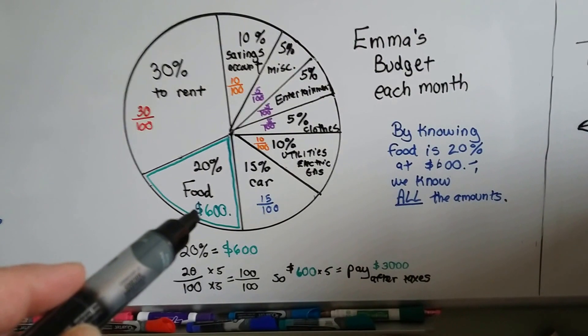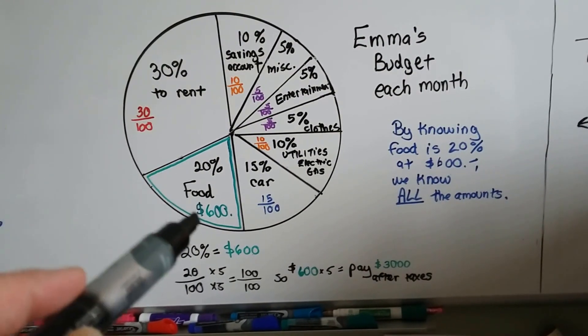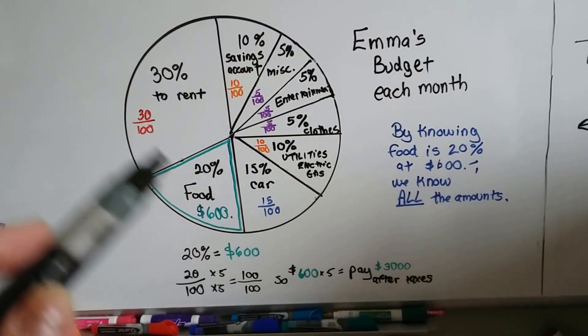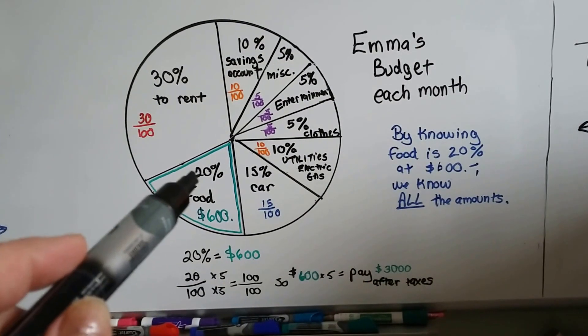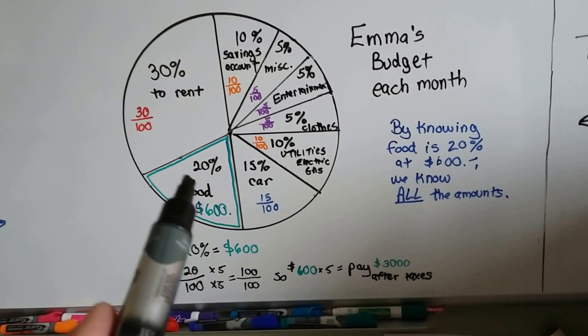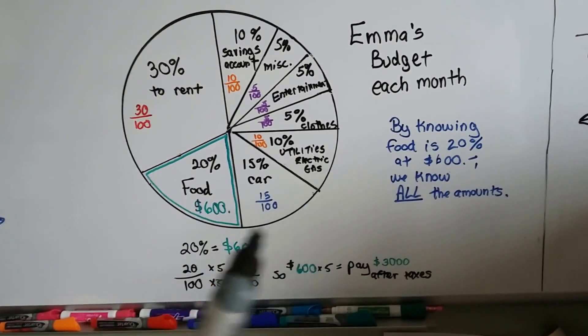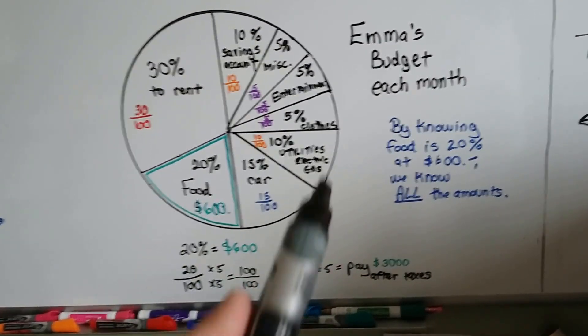And by knowing that she spends six hundred dollars a month on food and that's 20 percent of her budget, we could figure out what all the rest of these are. If food is 20 percent and utilities are 10 percent, 10 is half of 20. So utilities is half of 600, which is 300.